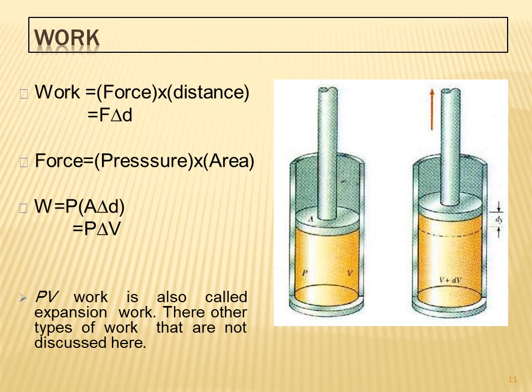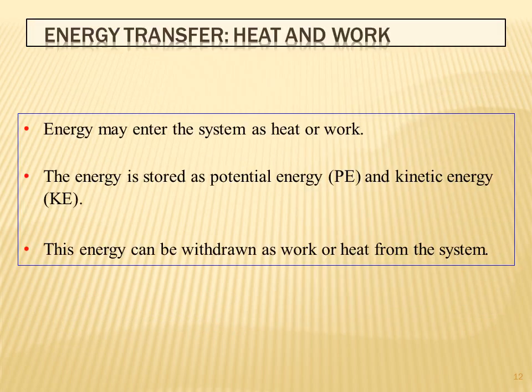Work is defined as force multiplied by distance: W = F × d. Force equals pressure multiplied by area, so work equals pressure times area times distance, which gives us PV work. This is also called expansion work. There are other types of work not discussed in this chapter.